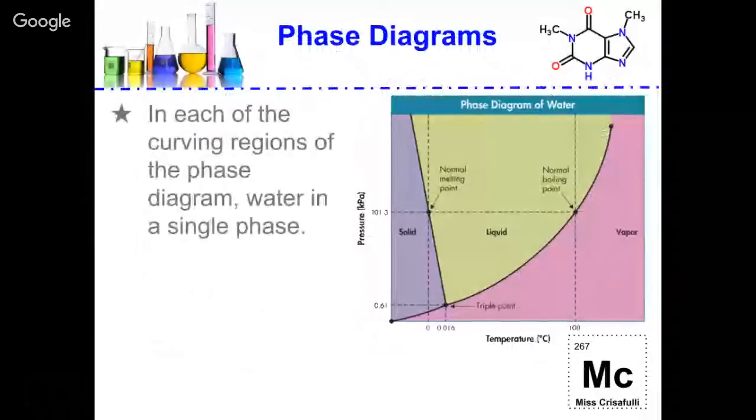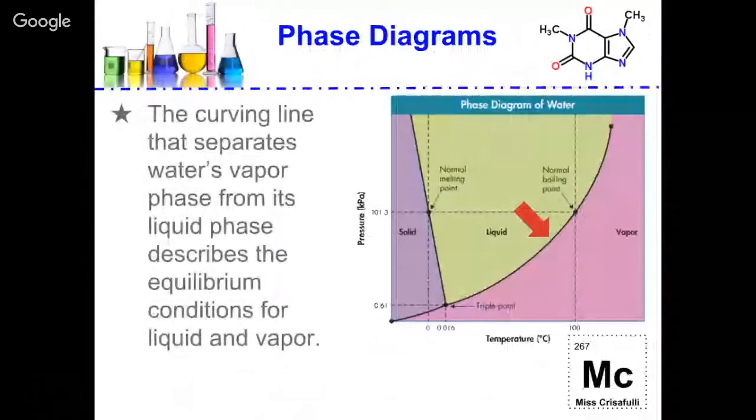In each of the curve regions of the phase diagram, water is in a single phase. You can see the purple side is where it's always a solid, the greenish side is where it's always a liquid, and the pinkish side is where it's always a vapor.